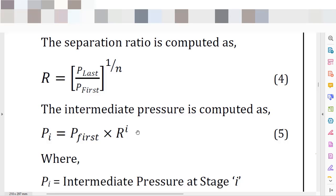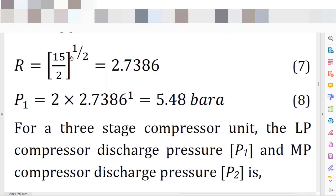To exemplify that, we can see the calculations performed in the article. In the e-book's case study, we have a discharge pressure condition of 15 bar A and an inlet condition of 2 bar A. So the global pressure ratio is 15 divided by 2, which gives 7.5 — dimensionless. Because we have two stages of compression, we take the square root of 7.5, which leads to 2.7386. The discharge pressure of the first stage is 2 bar A multiplied by 2.7386, giving 5.48 bar A.